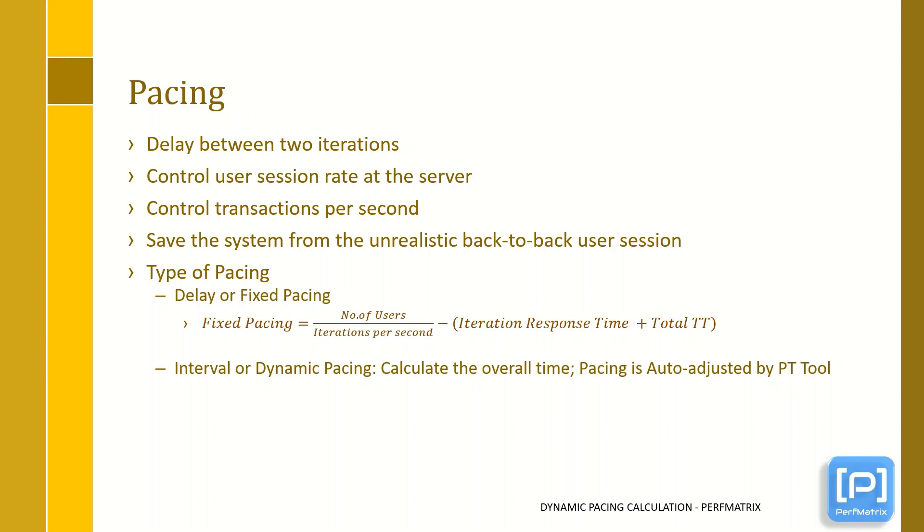To calculate this value, the formula is number of users divided by iterations per second. Using this formula, we can get how much time an iteration should take to complete. And this time includes response time of all the requests, total think time, and dynamic pacing.